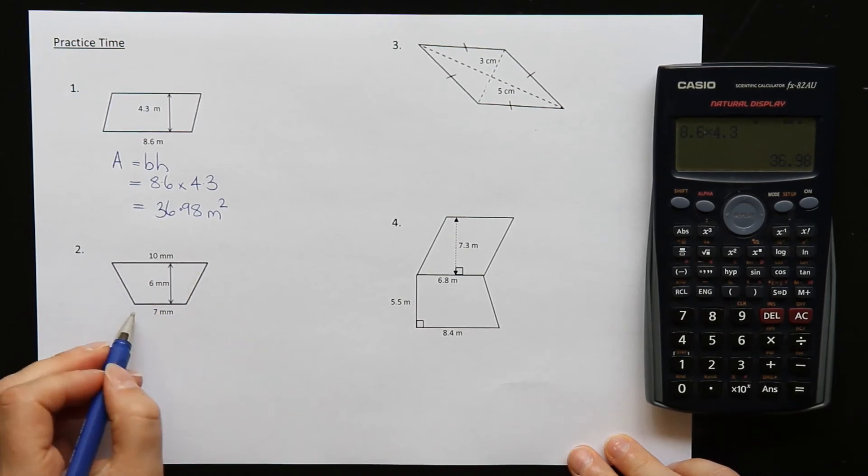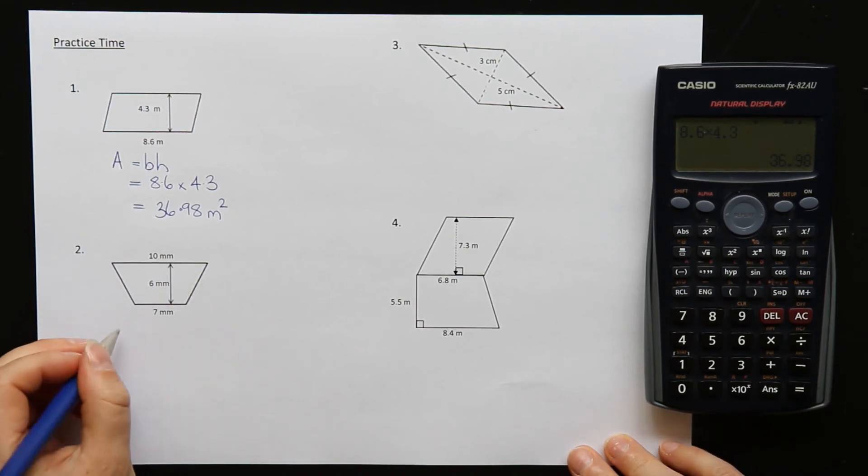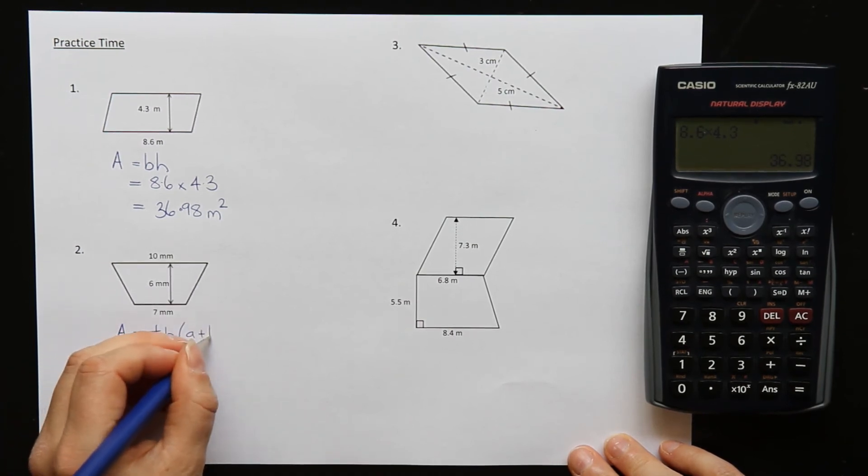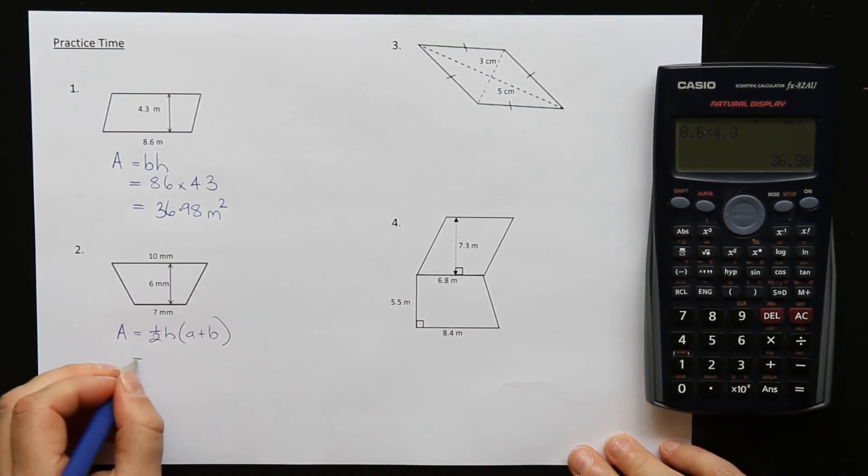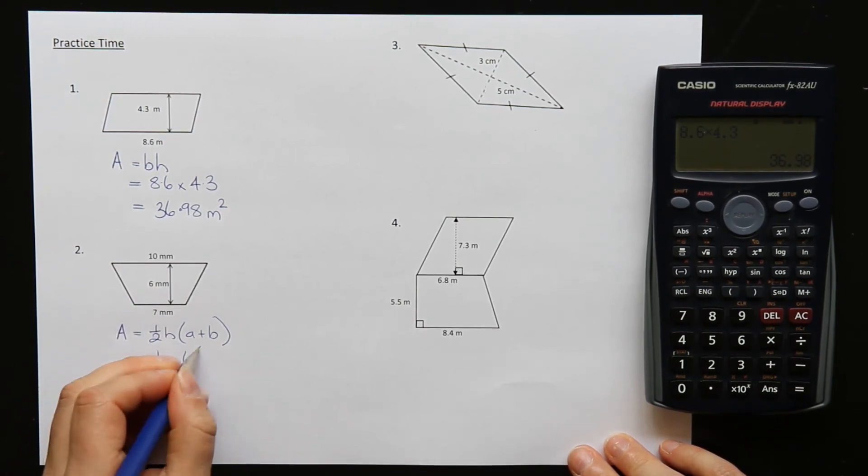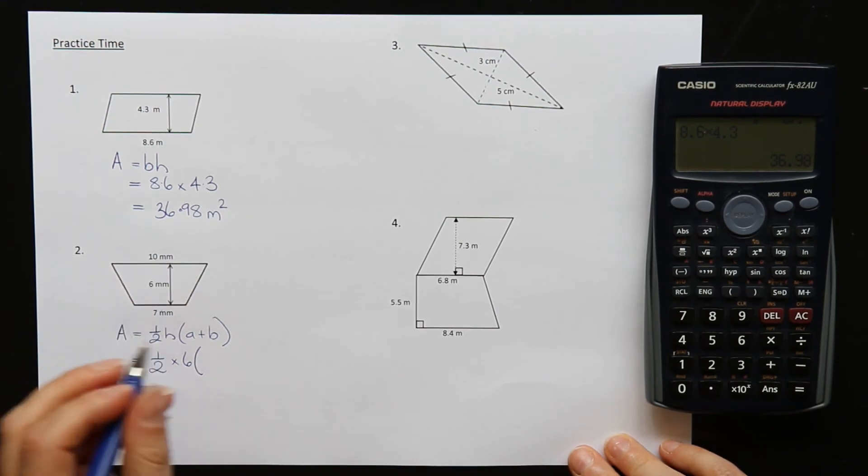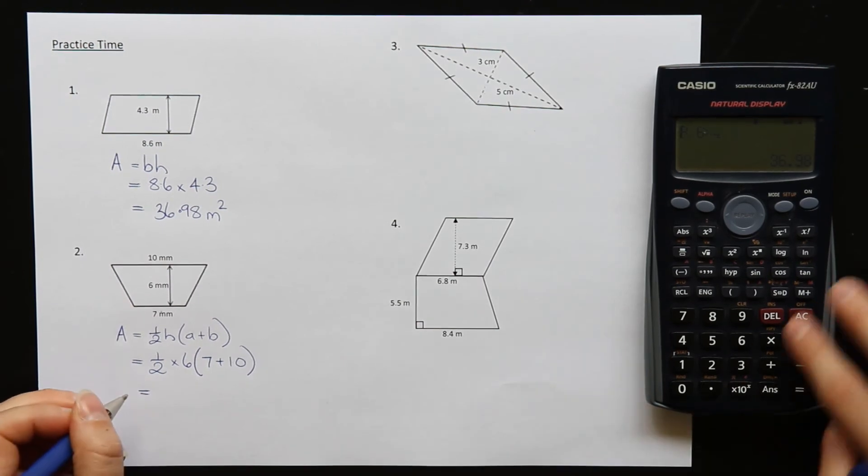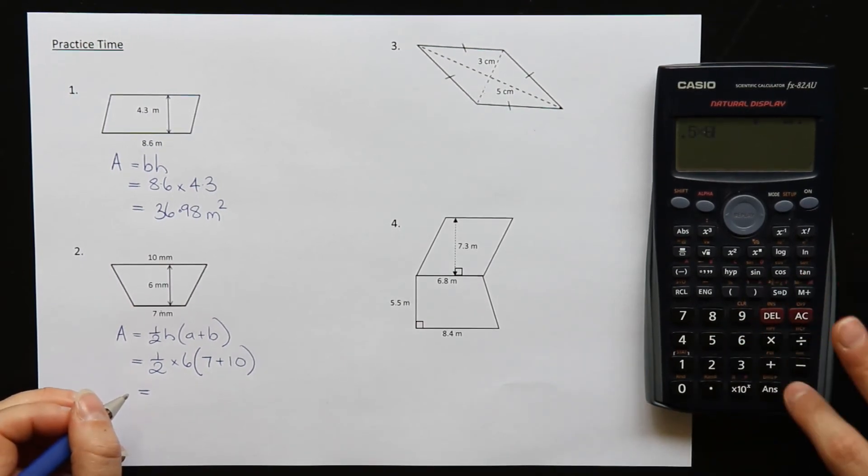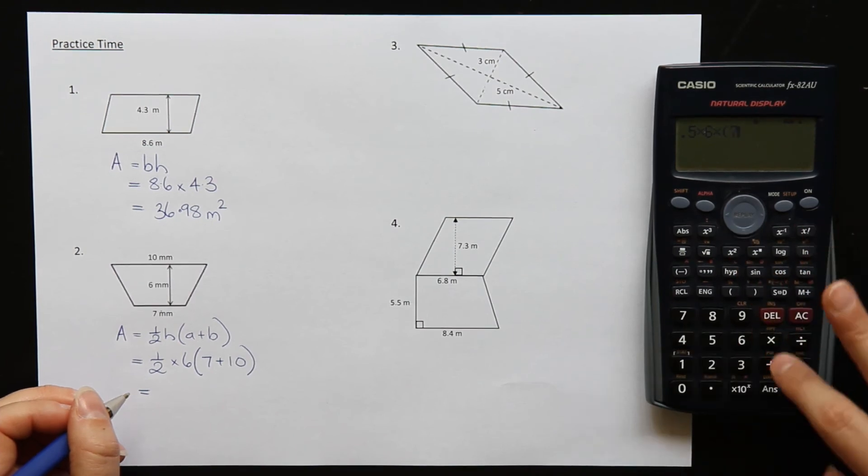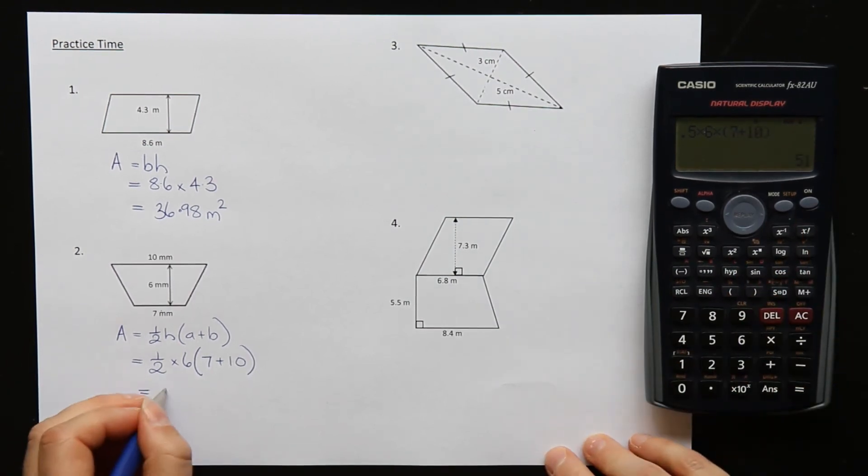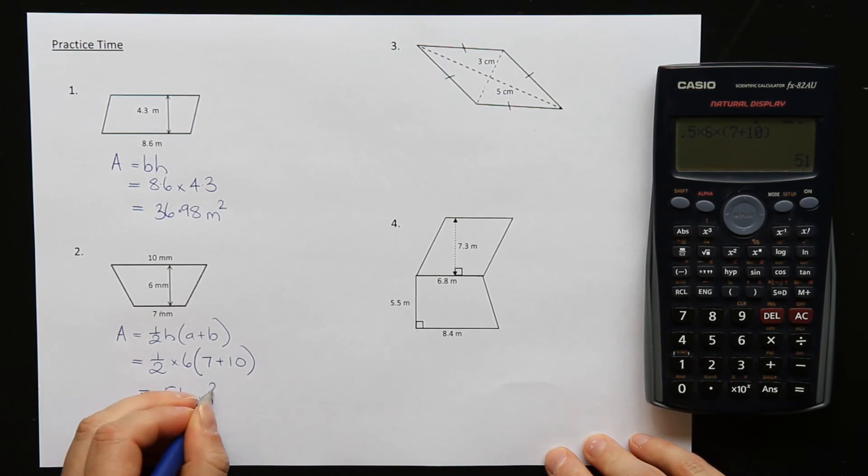Okay, question two. This shape is a trapezium. The formula for a trapezium is half H bracket A plus B. Substituting in, the height is 6.6 millimeters. The A and the B are the two parallel ones, 7 and 10. Then we calculate half times 6 times bracket 7 plus 10, which is 51 millimeters squared.